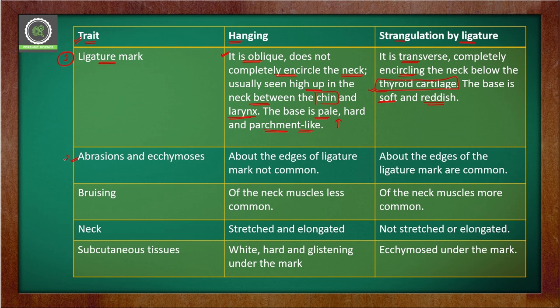The second trait is abrasion and ecchymosis around the edges of the ligature mark. These are not common in hanging, but in ligature strangulation the abrasion and ecchymosis marks are more common around the edges of the ligature. The third trait is bruising of the neck muscles, which is less common in case of hanging but is commonly seen in ligature strangulation.